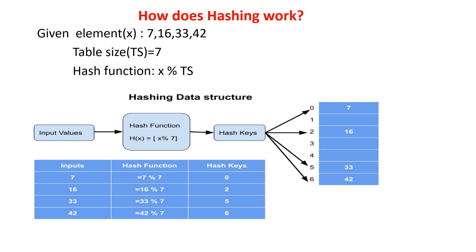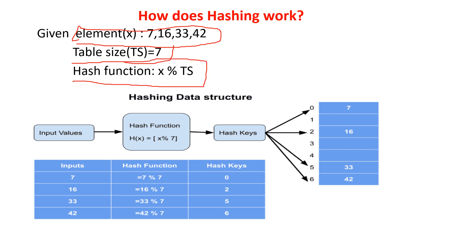Today I'll discuss how hashing works. In the previous class I explained all these searching techniques, and in this class I will explain hashing practically — how it works, how the key value is used to calculate the index using the hash function, and how the key value is stored in the table. There are three components of hashing: one is the key value, another is the table size, and the third is the hash function.